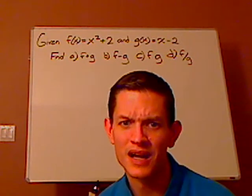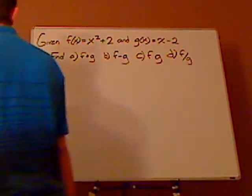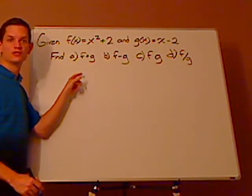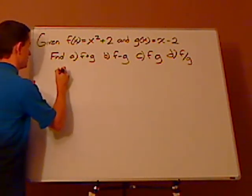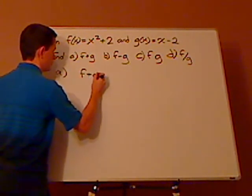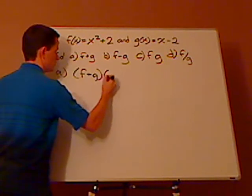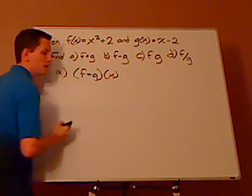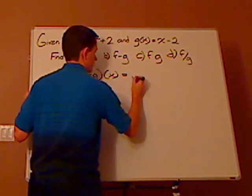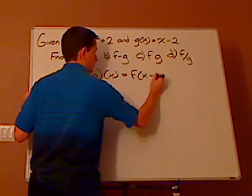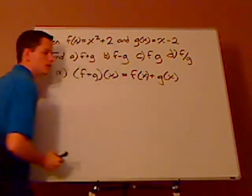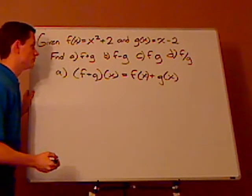With something like this, combinations is really straightforward. The first one is f plus g. I'm going to write the full notation — f plus g of x means you're adding the two functions together, so that equals f of x plus g of x. What you do then is just substitution.